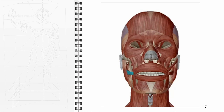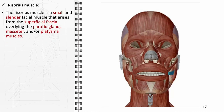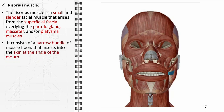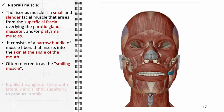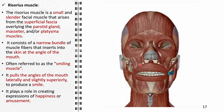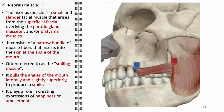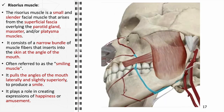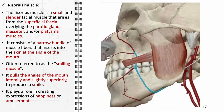The risorius muscle, a notable component of the buccolabial group, is a small and slender facial muscle arising from the superficial fascia overlying the parotid gland, masseter, and/or platysma muscles. A narrow bundle of fibers inserts into the skin at the angle of the mouth. Often referred to as the smiling muscle, it pulls the angles of the mouth laterally and slightly superiorly to produce a smile, playing a significant role in expressions of happiness or amusement. It is supplied by the facial artery and innervated by the buccal branch of the facial nerve.